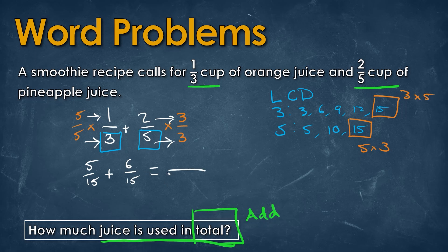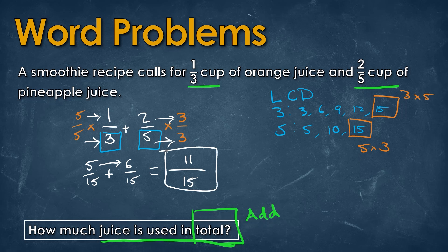Now that both fractions have the same denominator of 15, we add them. The denominator stays as 15 and we add the numerators: 5 plus 6 is 11. So how much juice is used in total? That would be 11 over 15.